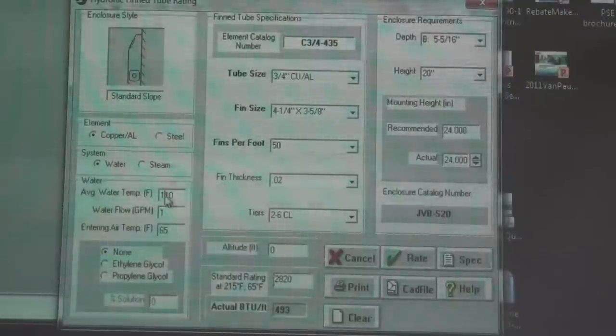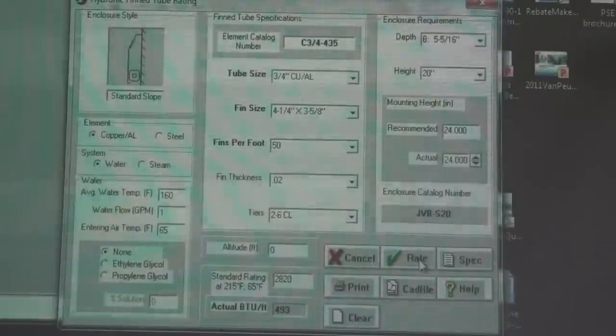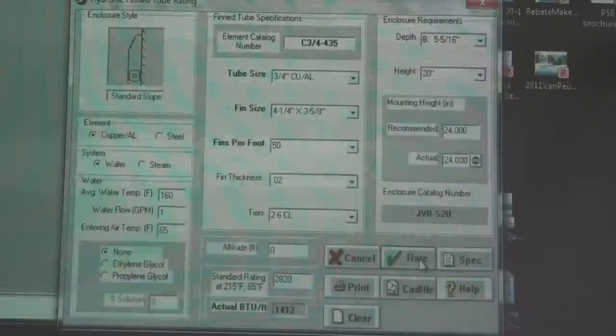So I'm going to bring it up to 160. Now watch what happens. Remember we were 1839 and 4, now we're 1412. So you can see, it's fairly linear, and then it gets down to these lower temps and it just drops off the map.